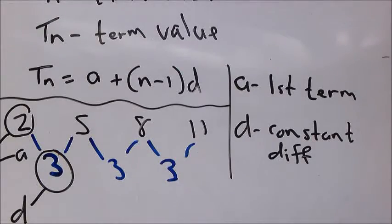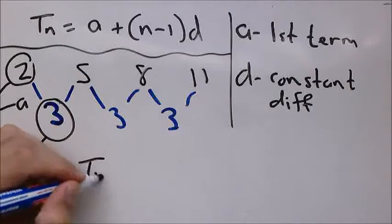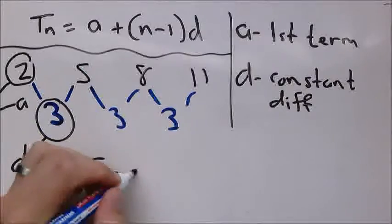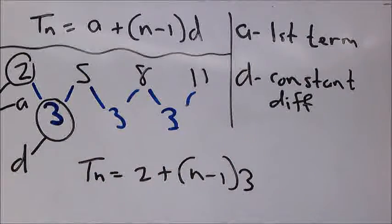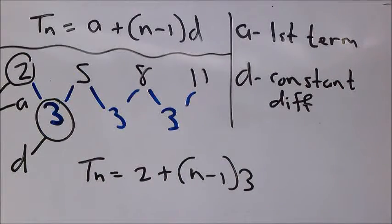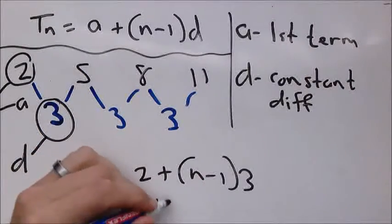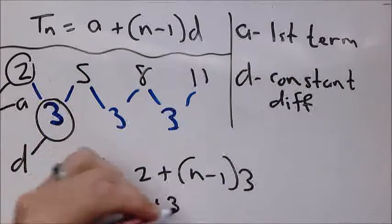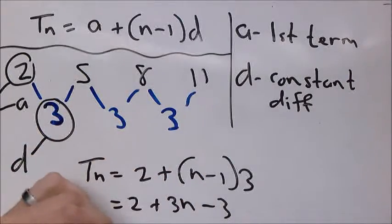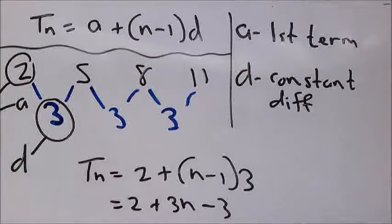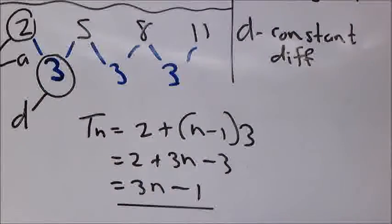The general formula for this specific sequence looks like this: Tn equals 2 plus bracket n minus 1 times 3. If you want to rewrite it, you can simplify it to this format, which you'll remember from your Grade 10 work.